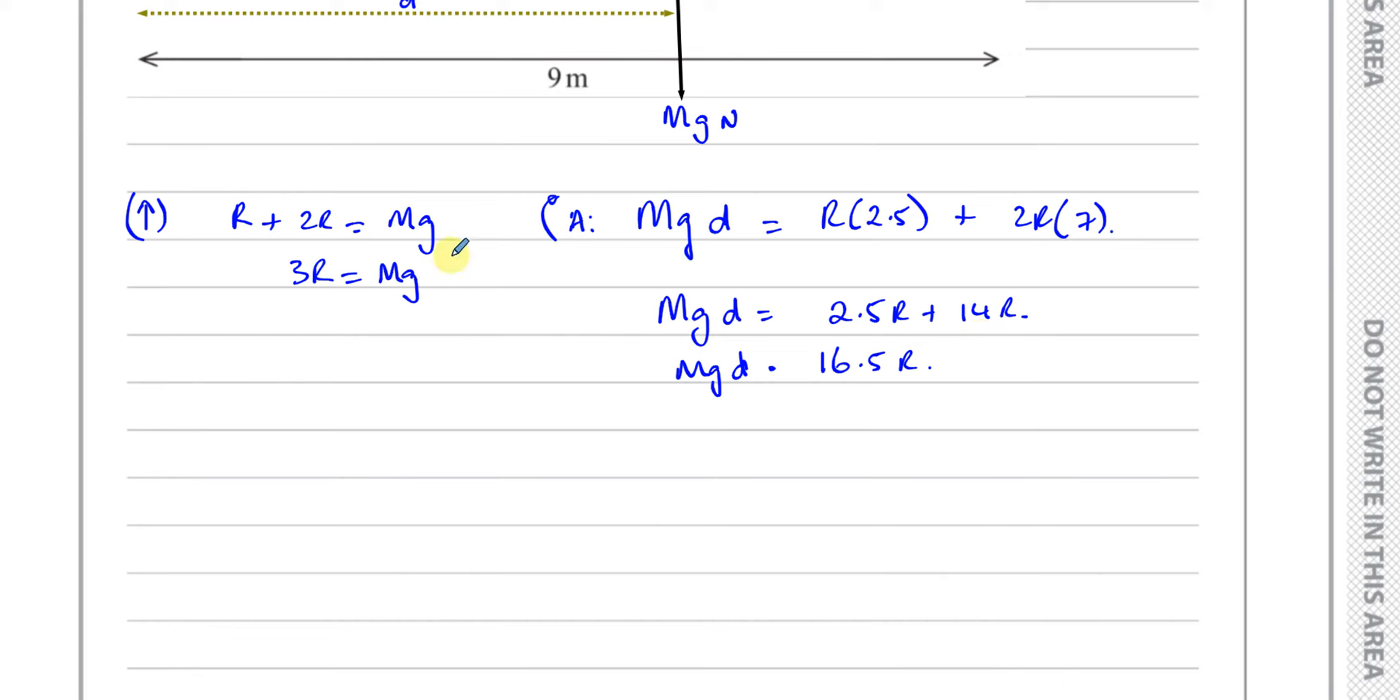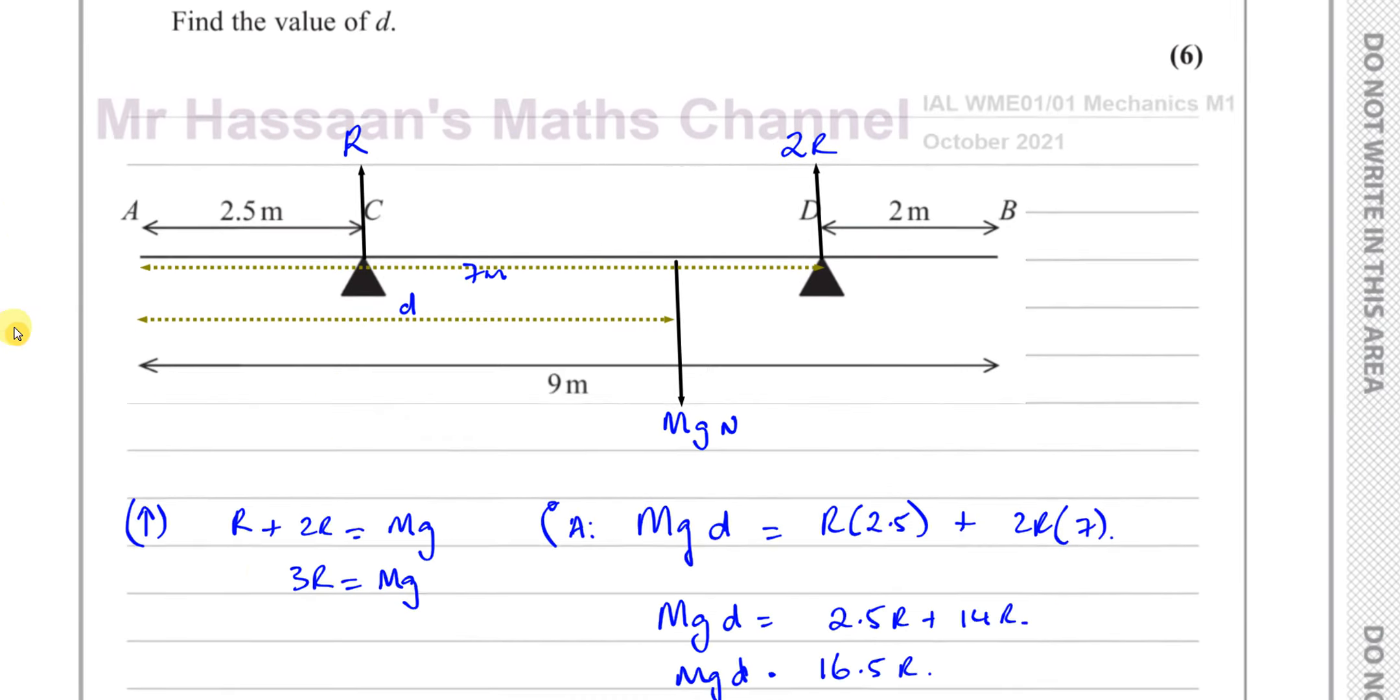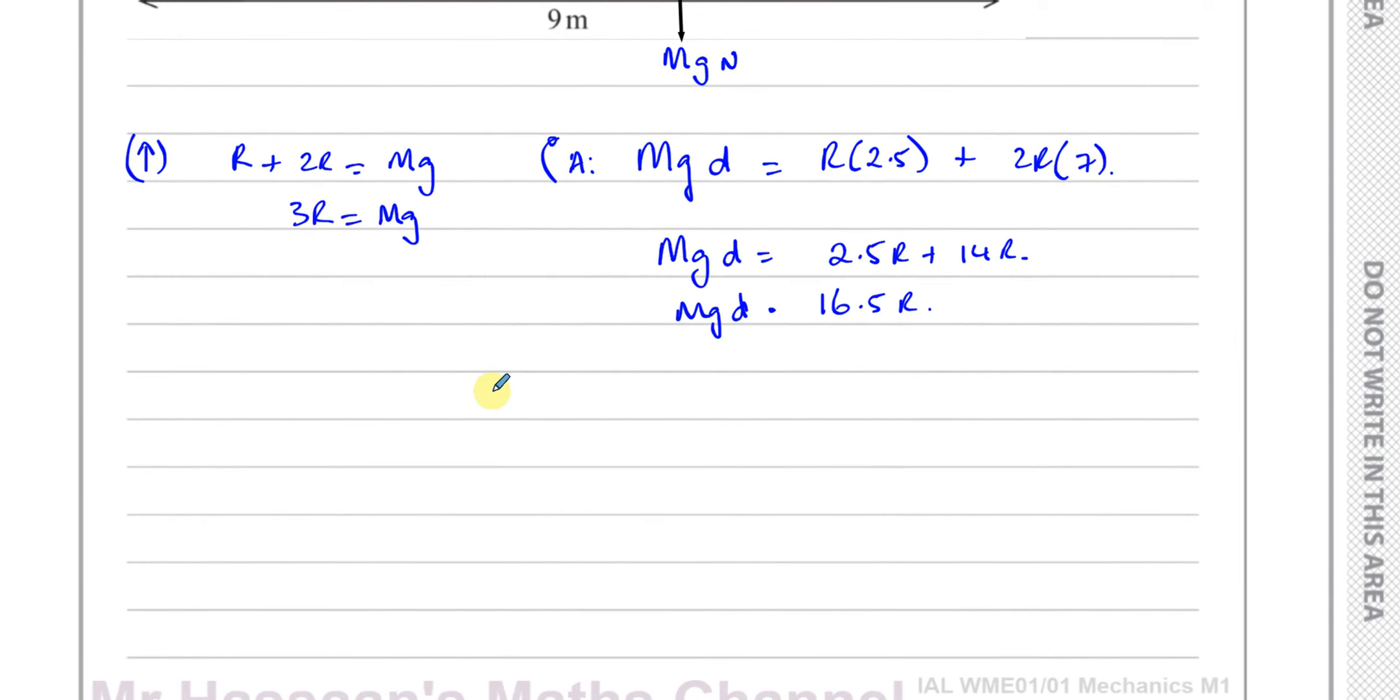So we've got a pair of simultaneous equations here which I can solve. The unknowns are M and D and R. So we need to find the value of D. What we can do is replace Mg with 3R. So we have 3R times D. I know that Mg equals 3R so I can replace Mg with 3R.